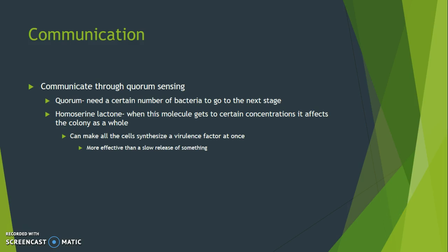And this is more effective than the slow release of something. Just picture this: if you have some cells in your body and it's going to slowly release a virulence factor, what's going to happen is your immune system is going to say, 'Oh look, we're starting to get more and more of this virulence factor in our cells. We need to start killing it.' So once it recognizes it, it can then go kill those cells.